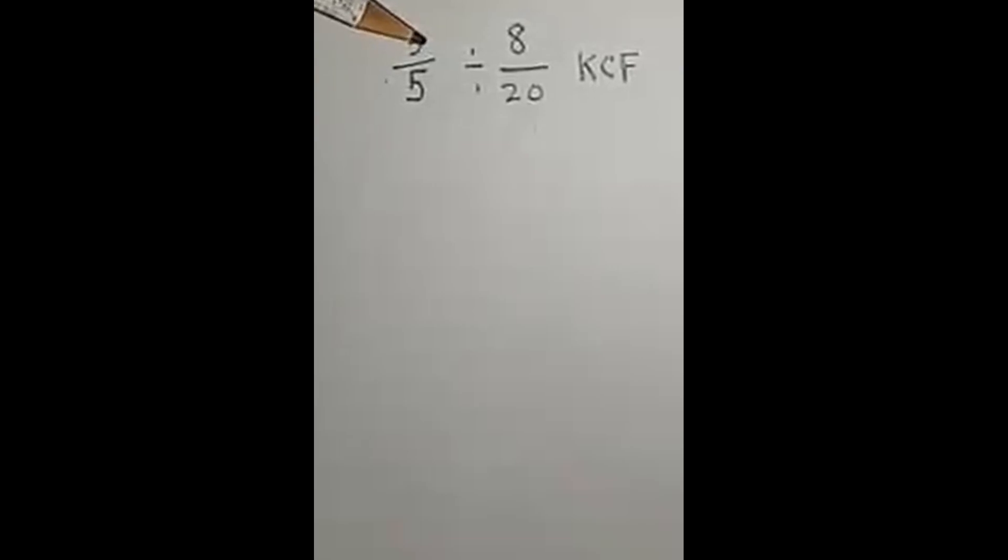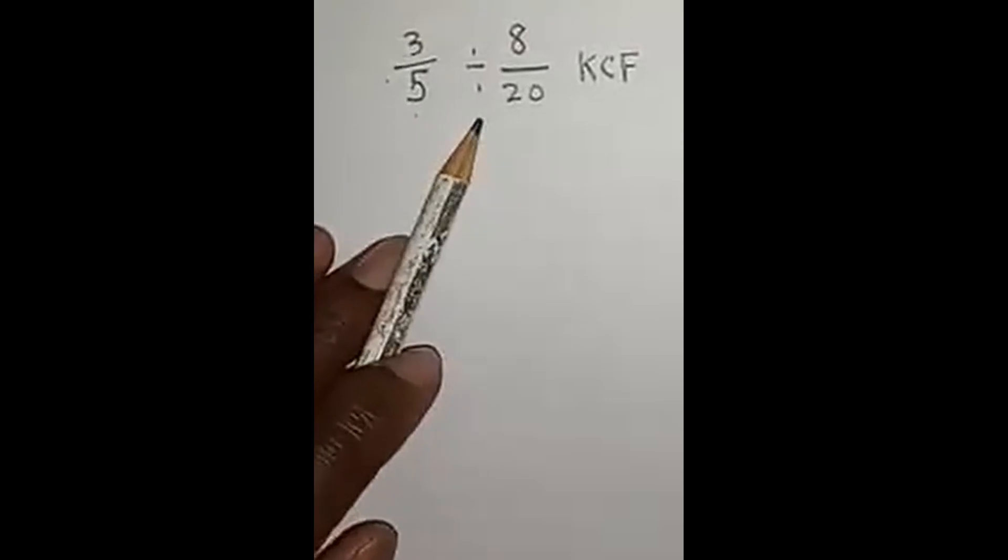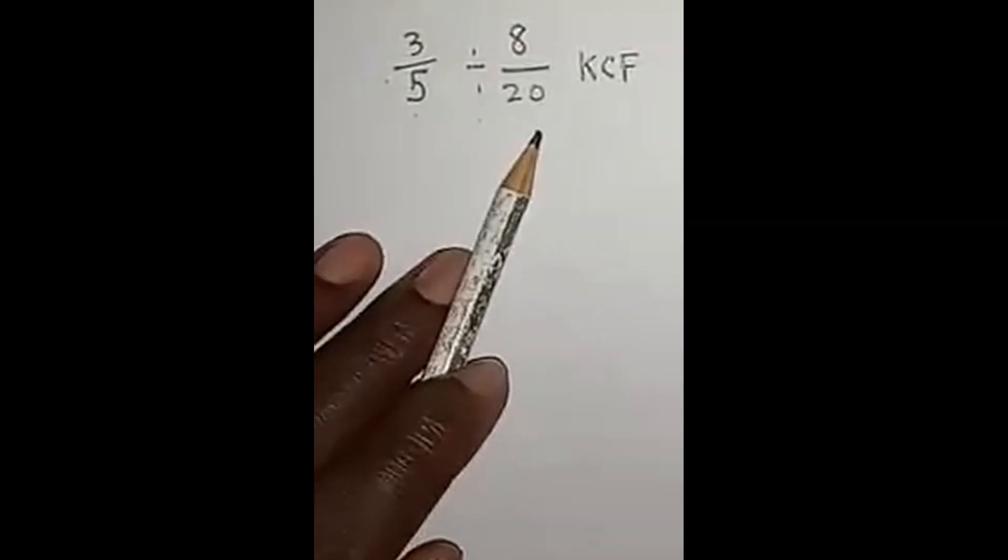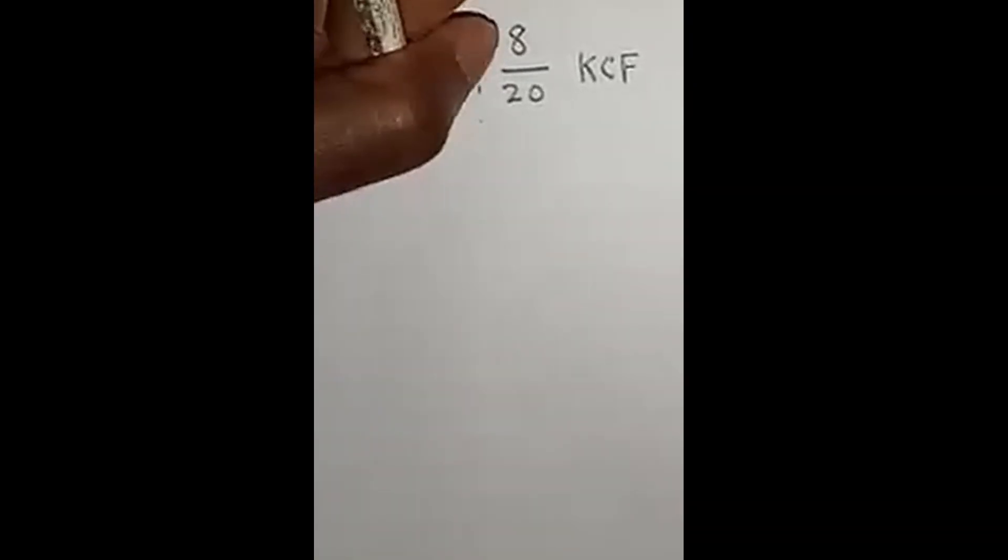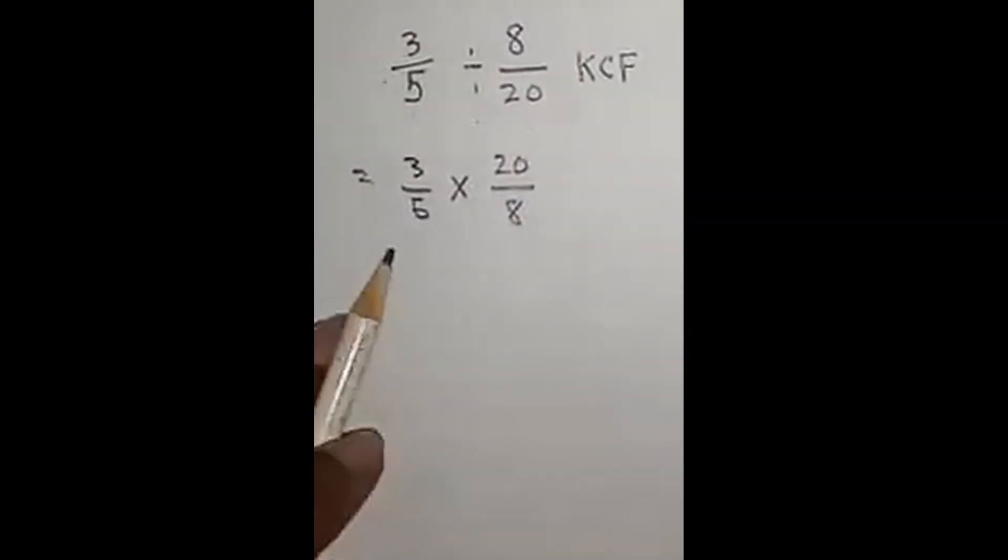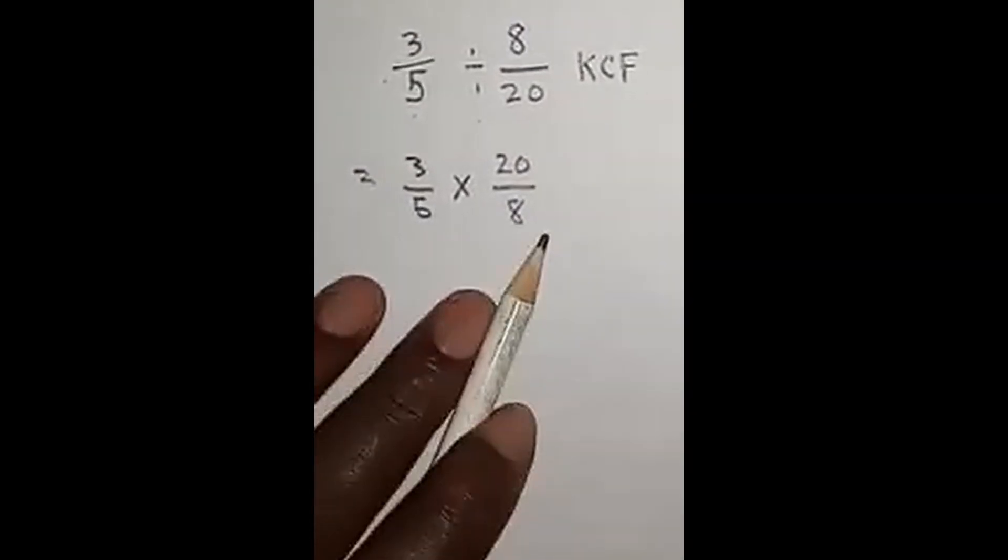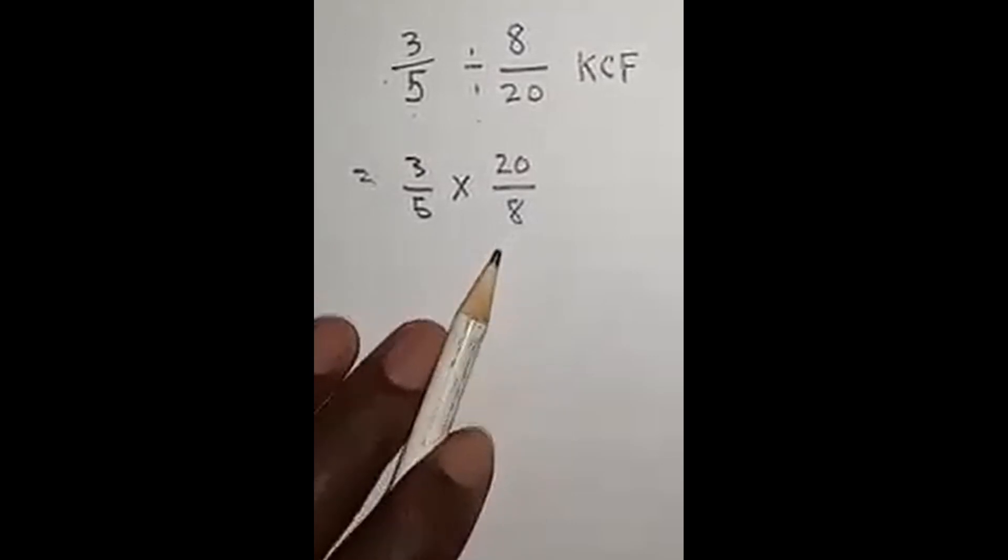Okay, let's look at dividing fractions. We're going to be using keep change flip. We're going to keep this fraction the same, change the sign to multiplication, and flip this second one. That's what it looks like when we keep change flip, and now we can multiply by brute force.